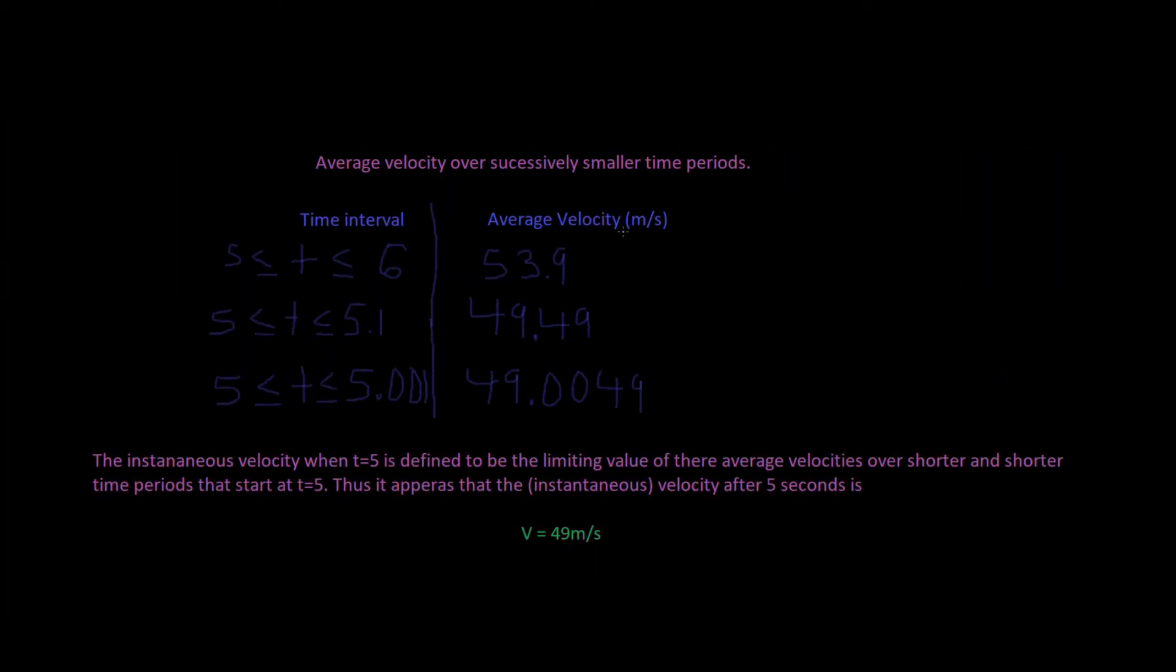So, average velocity over successively smaller time periods. We're going to be given our time period intervals between 5 to 6. And so, our average velocity between here would be 53.9, because we're plugging in our number for 6. And so, right here, we have a time interval of 5 to 5.1, and we end up getting the number we had earlier. And so, we're trying to approximate the closest number to 5. And so, this is really close to 5. It's going to be 49, because you can clearly see that it's getting closer and closer to 49. So, it converges to 49.